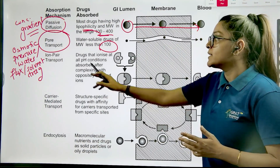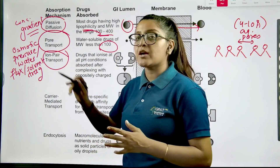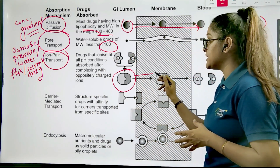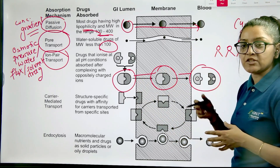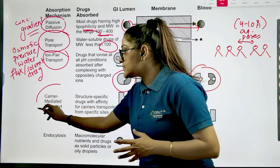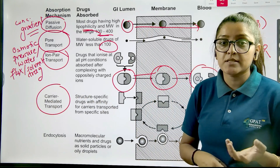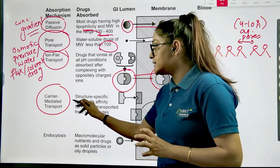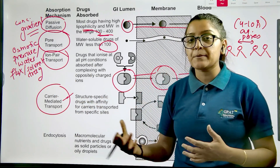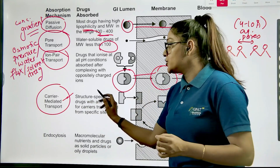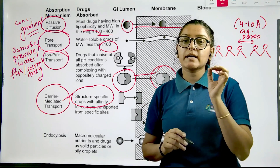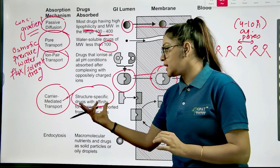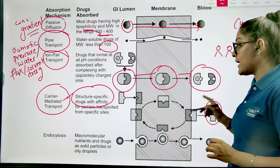The third mechanism is ion pair transport. Here, the drug finds its counter ion, forms a complex with it, and that complex facilitates entry of the drug through the membrane into systemic circulation, after which the counter ion is freed. The fourth is carrier-mediated transport. Sometimes transport cannot occur on its own and requires carriers. These carriers are non-polar, making them compatible with the membrane, and they are structure specific. The process is capacity limited — carriers are limited — so drugs bind via a lock-and-key mechanism, are transported across, and the carrier is freed.